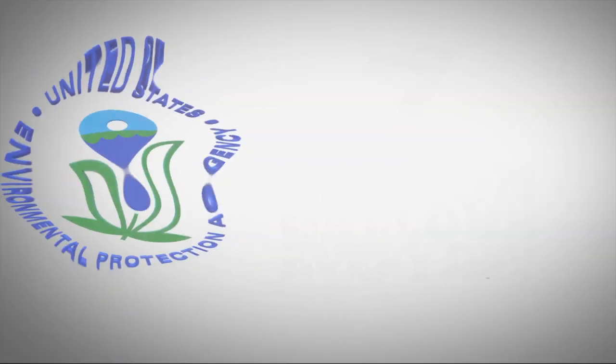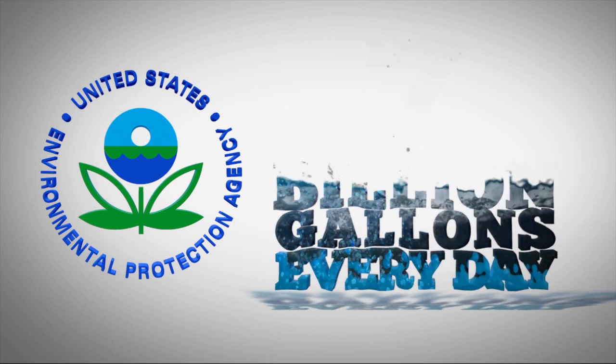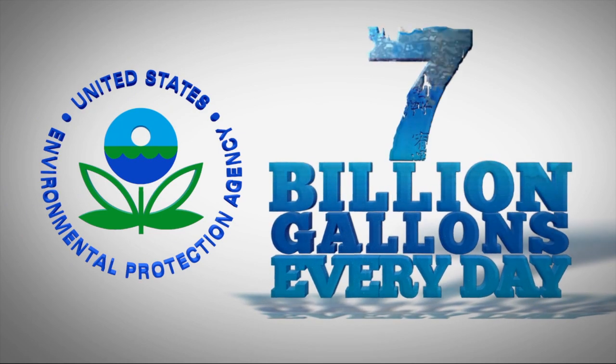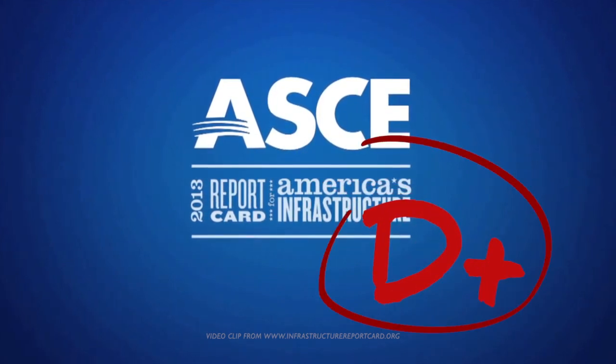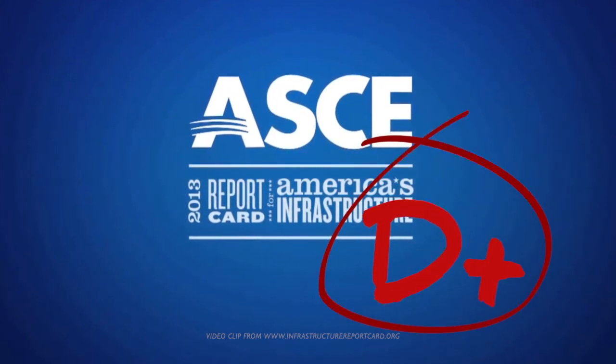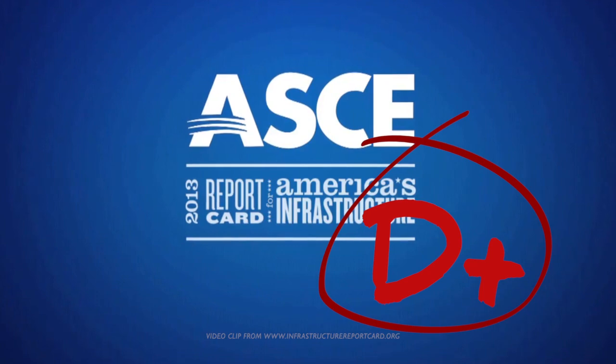According to the U.S. Environmental Protection Agency, water main leaks are responsible for losing approximately seven billion gallons of drinking water every day in the U.S. This volume of lost water, also known as non-revenue water, may come as no surprise considering U.S. Infrastructure received a D plus in the American Society of Civil Engineers 2013 Infrastructure Report Card.